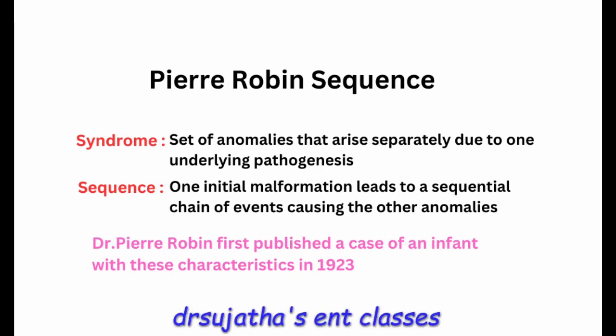Pierre Robin sequence was previously named as Pierre Robin syndrome. The difference between syndrome and sequence is that a syndrome is a set of anomalies that arise separately due to one underlying pathogenesis. But in a sequence, one initial malformation leads to a sequential chain of events causing the other anomalies. In Pierre Robin sequence, micrognathia is the first abnormality that leads to glossoptosis and ultimately to airway obstruction and/or cleft palate.